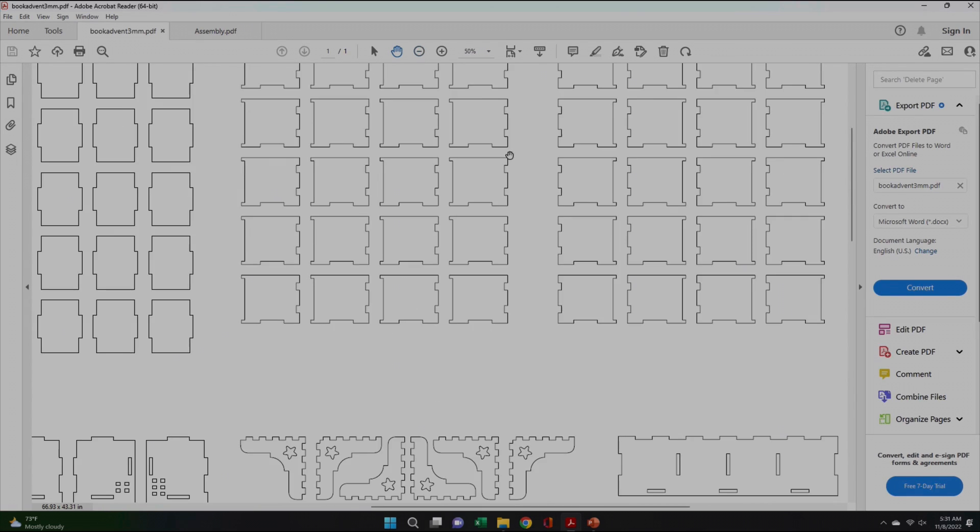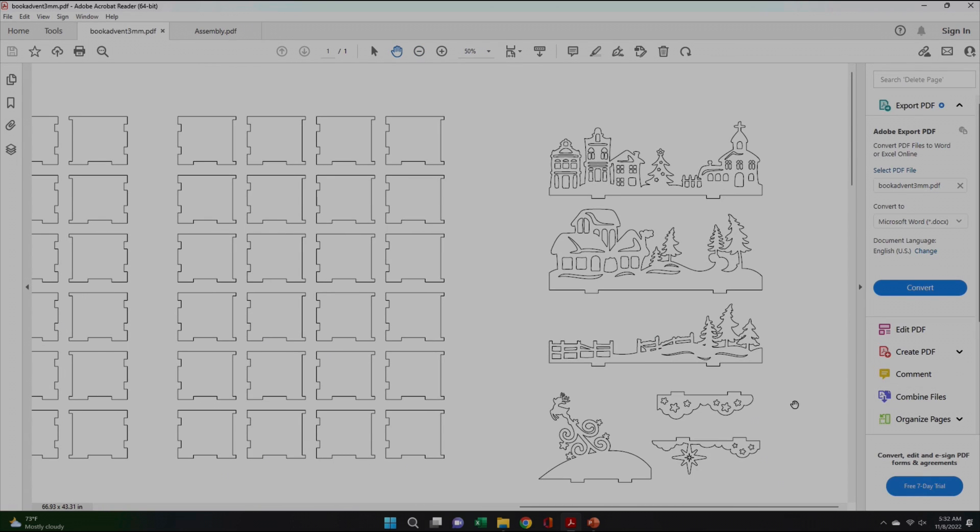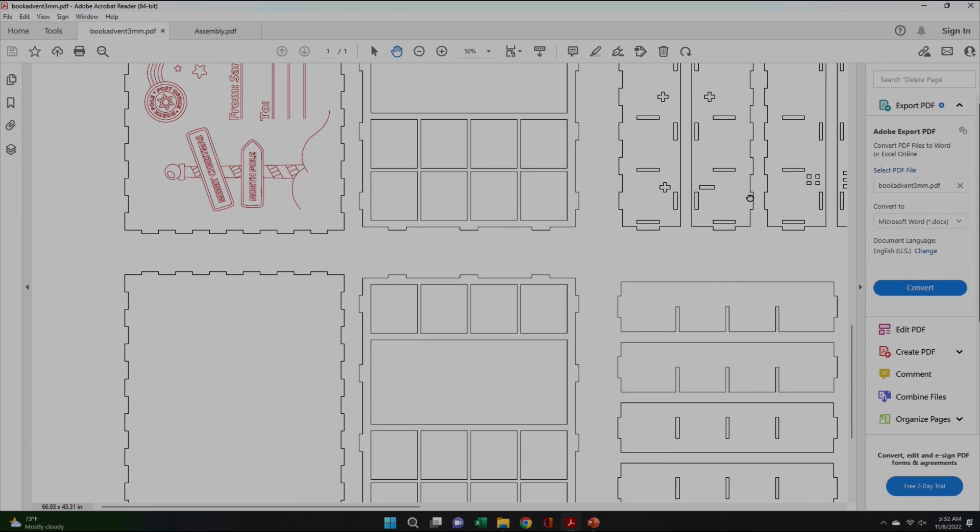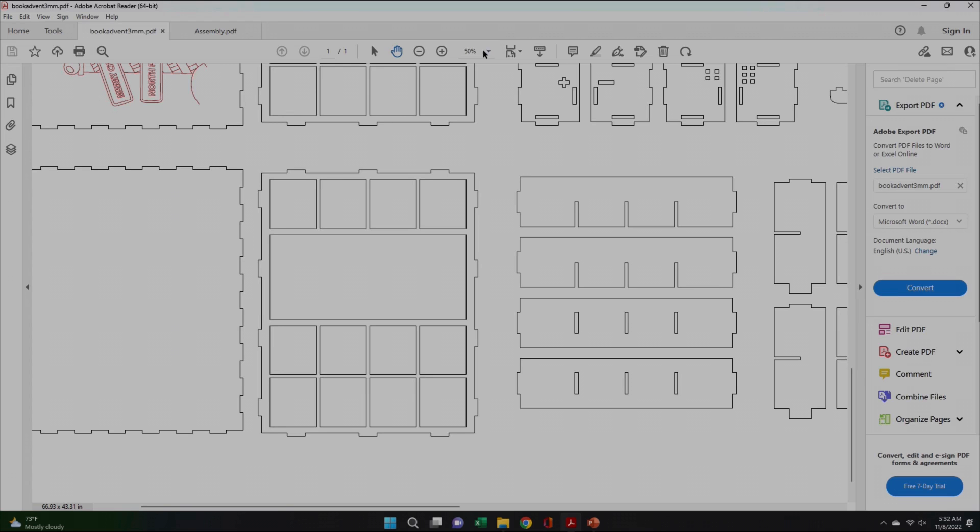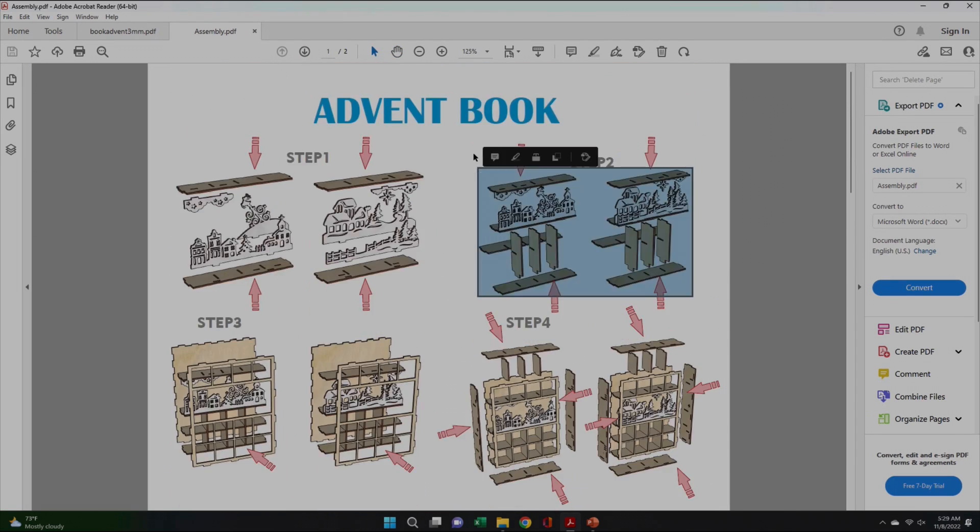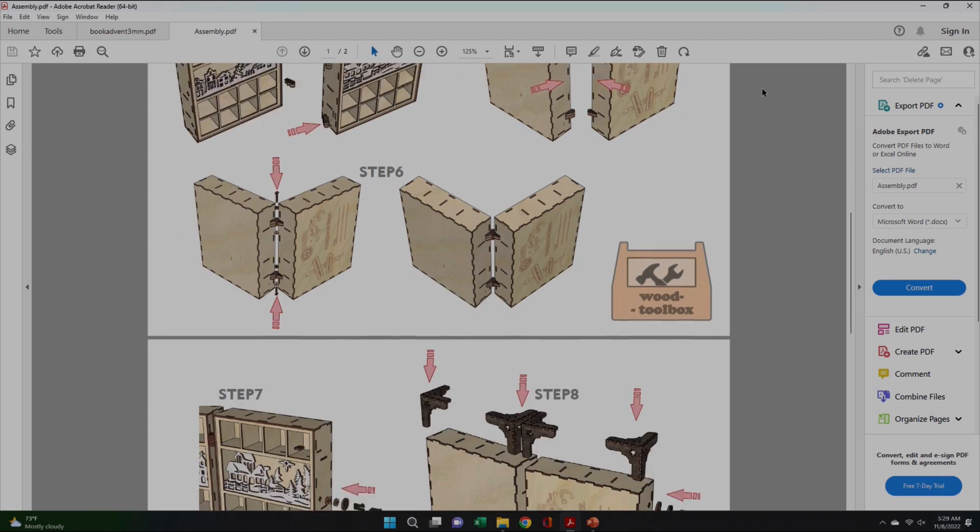The plywood that I'm using for this is 3mm, so I made sure I used the 3mm file. I'm not affiliated with Toolbox Turkey at all, but I will say that their plans came out great. Every single thing fit together really well. In addition to the laser cut files, there were also nicely illustrated assembly instructions.